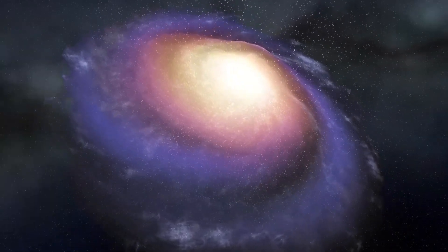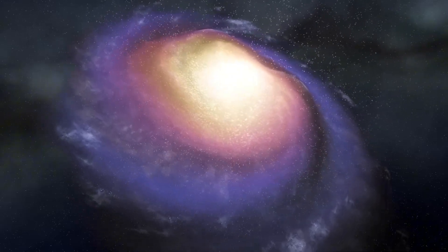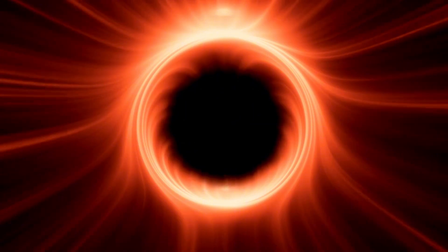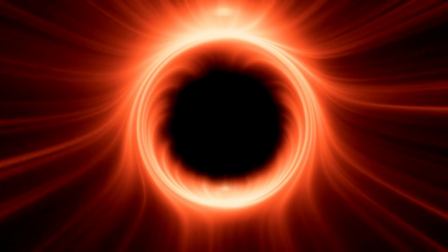Smaller stars, when they die, transform into something called neutron stars, which are super dense but not dense enough to trap light. However, if a star is about three times the mass of our sun, it collapses under its own gravitational pull, forming a black hole.